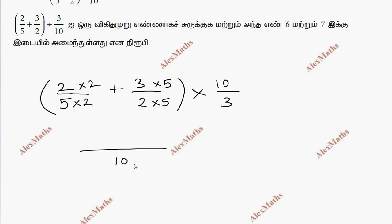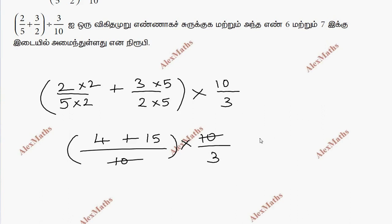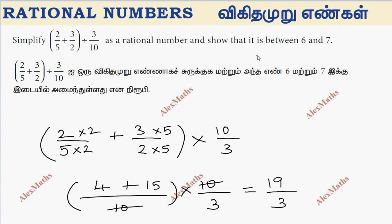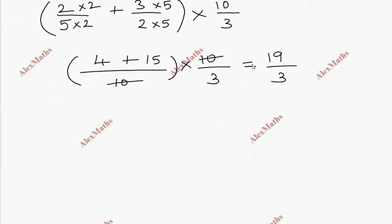The common denominator is 10, so the numerator is 4 plus 15, into 10 divided by 3. This gives a total of 19 by 3. We check that 19 by 3 is between 6 and 7, so we will divide 19 divided by 3.